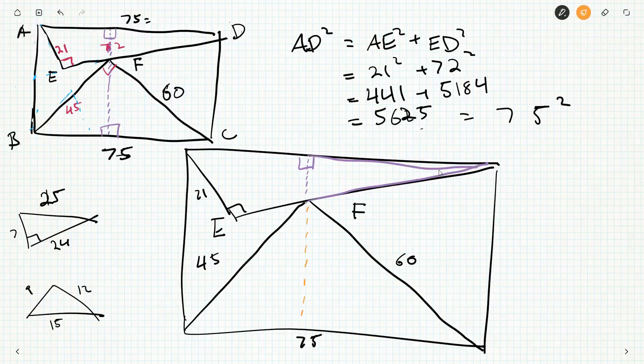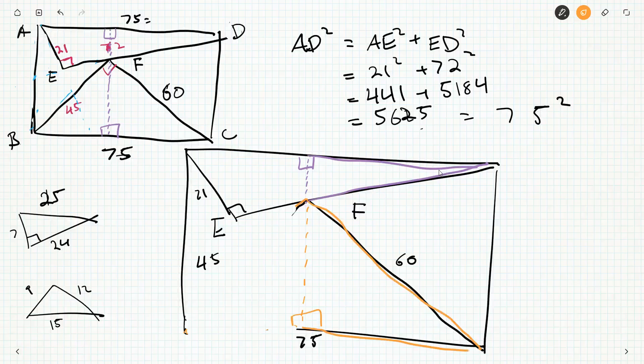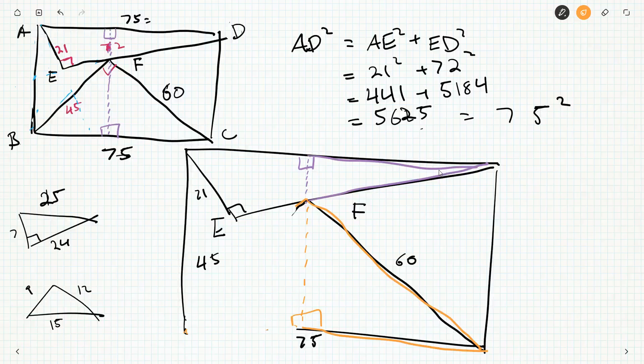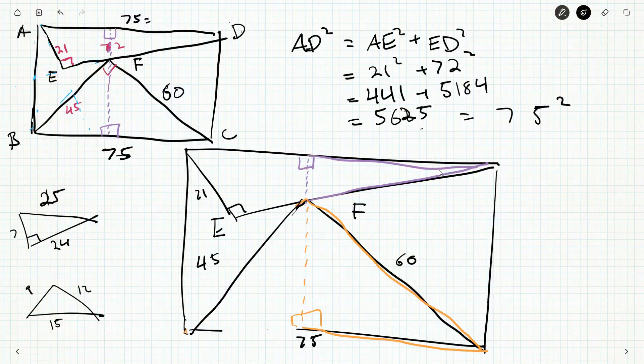75, and then if I drop a height here I get this purple triangle which is similar to AED. We can get this orange triangle here, or would it be better to use this one because then we'd have the same length. This guy here, he's ultimately similar to a 3-4-5 triangle, so this would be a 3-4-5 as well.